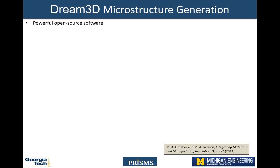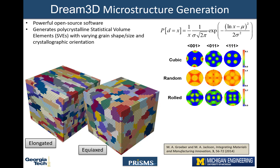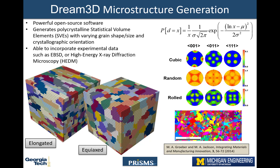As mentioned previously, polycrystal microstructures are generated using the open-source Dream3D software. It has the capability to generate microstructures that vary in grain size and shape, crystallographic texture, crystal structure, phase, and other aspects. Most commonly, ensembles of statistical volume elements, or SVEs, are generated. Sample microstructures with elongated and equiaxed grain morphologies are shown on the left, and three common face-centered cubic crystallographic textures are shown on the right. Additionally, Dream3D is able to incorporate experimental data such as electron backscatter diffraction or from high-energy X-ray diffraction microscopy experiments performed at synchrotron sources.